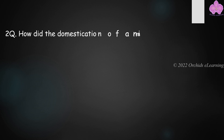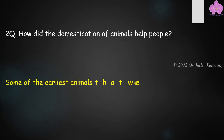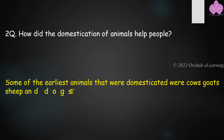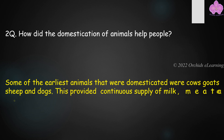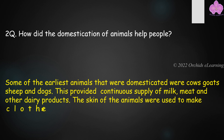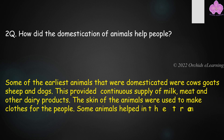How did the domestication of animals help people? Some of the earliest animals that were domesticated were cows, goats, sheep, and dogs. This provided a continuous supply of milk, meat, and other dairy products. The skin of the animals was used to make clothes for the people. Some animals, like the horse and donkey, helped in transportation.